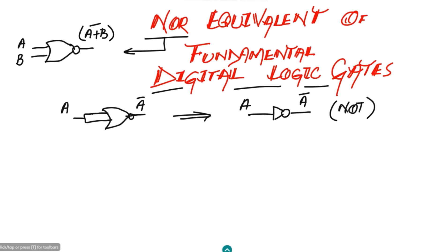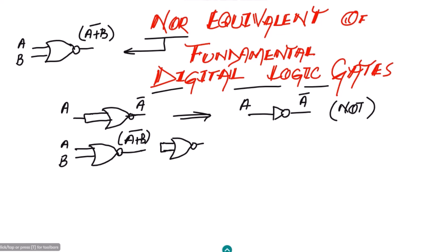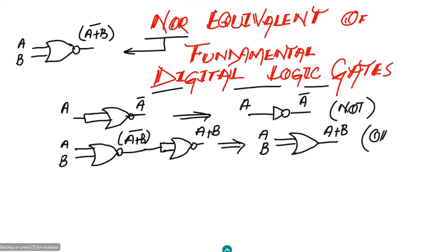Similarly, if I have a NOR gate with two inputs A and B, at the output I will get A plus B whole complement. This is then applied to another NOR gate whose two inputs are shorted together. The complement of the complement cancels out — negative of negative is positive — so at the output I get A plus B, which is the OR gate.